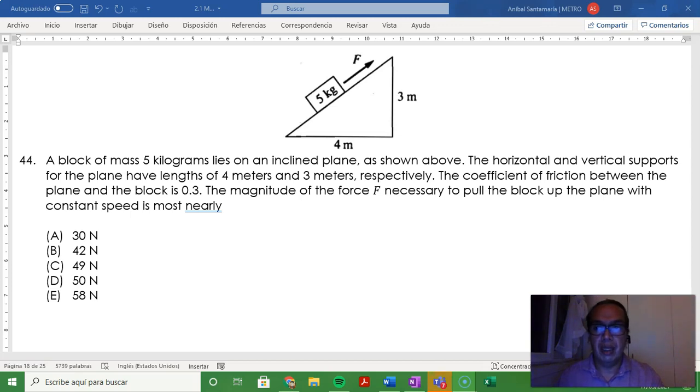Number 44. A block of mass 5 kilograms lies on an inclined plane as shown above. The horizontal and vertical supports for the plane have lengths of 4 meters and 3 meters respectively. The coefficient of friction between the plane and the block is 0.3. The magnitude of the force F necessary to pull the block up the plane with constant speed is most nearly.